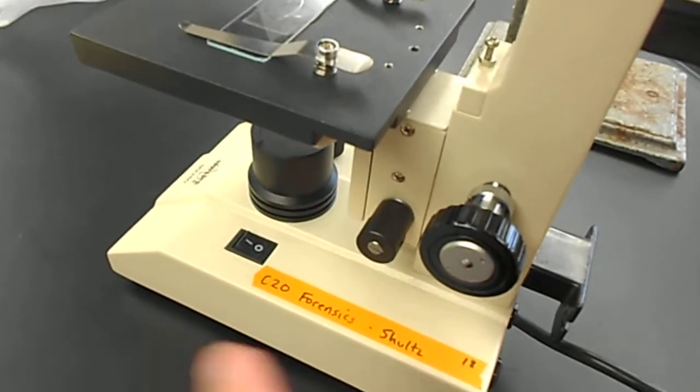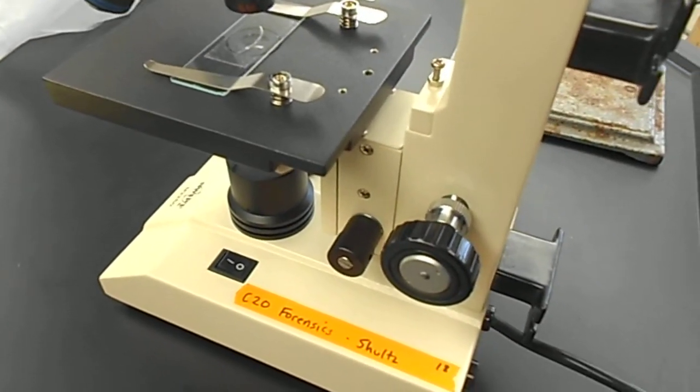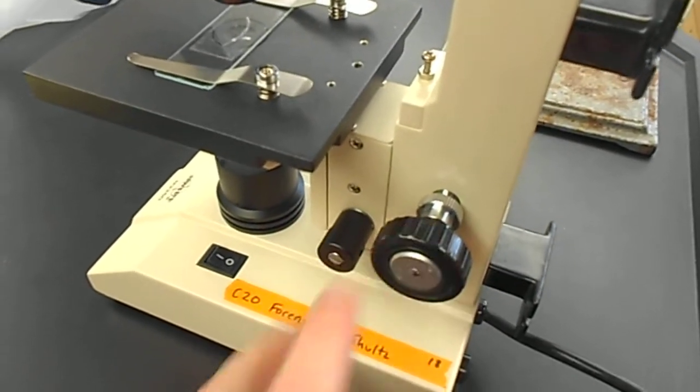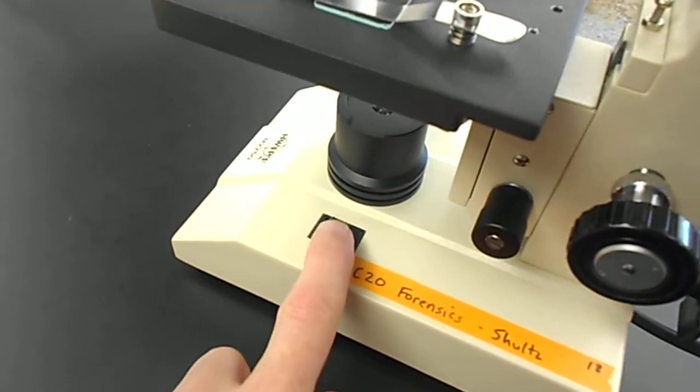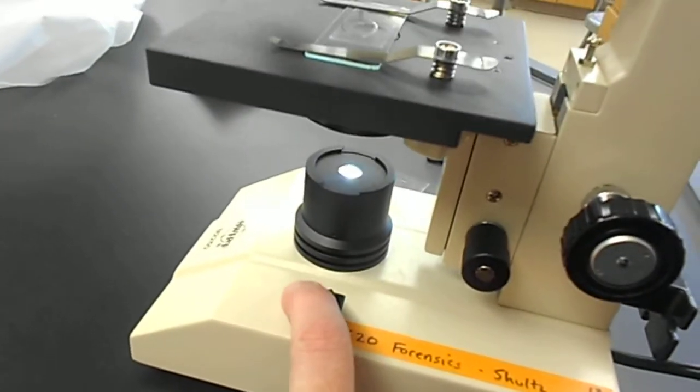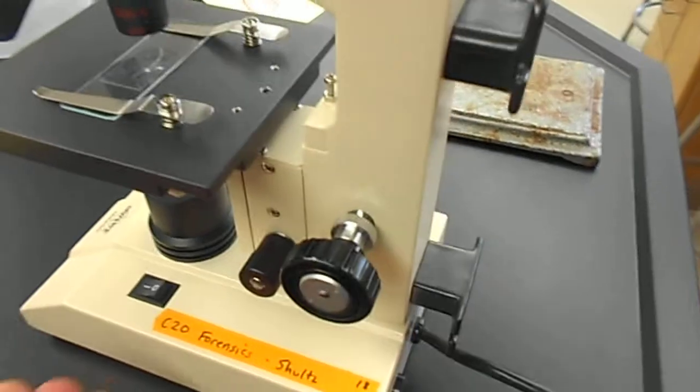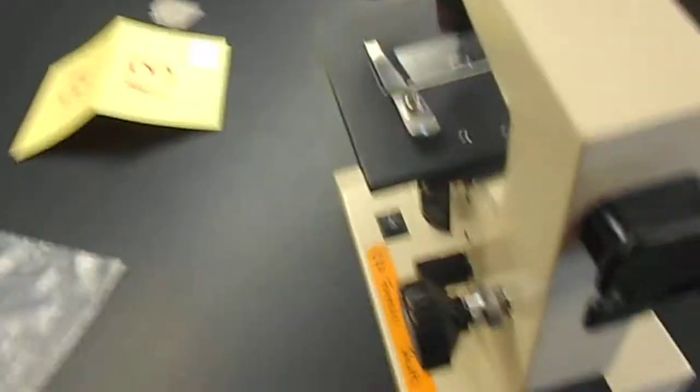Now this kind of microscope, unlike the last one, has two focusing knobs. Oh, by the way, we also want to turn on the light. There's different ways it works, but I'm going to use this switch, turn on the light. We need light shining up through the hair in order to be able to see it.